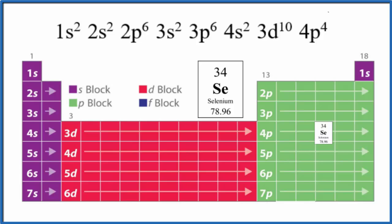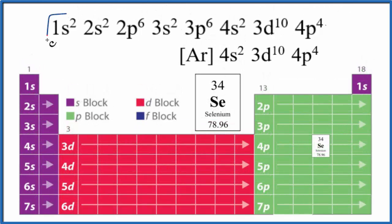If we wanted to write the condensed notation, we could do that this way. If we wrote the noble gas configuration for argon, it would look like this. So we can just condense that down and then have the rest of our configuration.